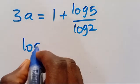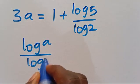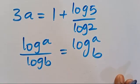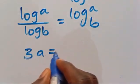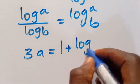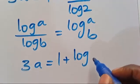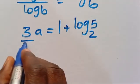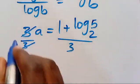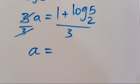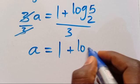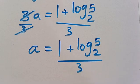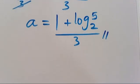Recall that log a divided by log b equals log of a in base b. Applying that here, 3a equals 1 plus log of 5 in base 2. Dividing both sides by 3, we get a equals (1 plus log₂5) divided by 3. So this is the value of a. Now let's verify.